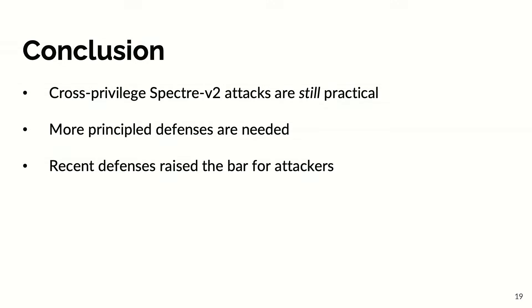To conclude: our work shows that cross-privilege Spectre V2 attacks are still a practical threat, and we make a case for more principled defenses to prevent this kind of exploit altogether. On the other hand, we still think defenses like IBRS and CSV2 are fairly useful because they raise the bar for attackers, making these kinds of attacks much harder than in the past. So there is value in continuing to work on these defenses as well.